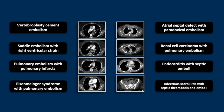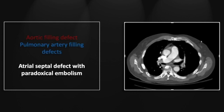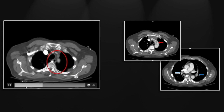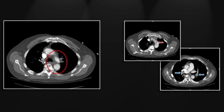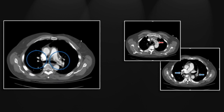Our next case is an atrial septal defect with paradoxical embolism. There is an unusually configured filling defect in the aortic arch itself, which extends up into the left subclavian as well. There are extensive filling defects throughout the pulmonary arteries. These findings are obviously linked: the left subclavian occlusion, the filling defect within the aortic arch, and the filling defects throughout the pulmonary arteries.